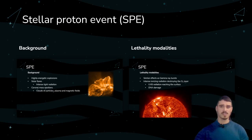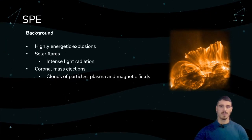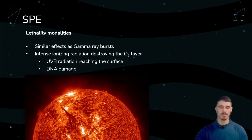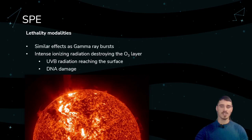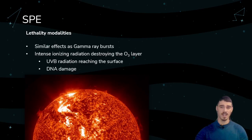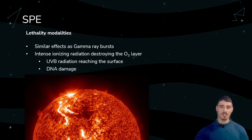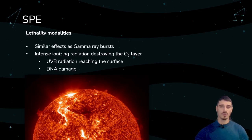Now we will be taking a look at the stellar proton event. SPEs are highly energetic explosions originating in stars. These include solar flares — flashes of intense light radiation that erupt from small sections of the star — as well as coronal mass ejections, which are giant clouds of particles, plasma, and magnetic fields ejected from the star. The lethality effects are similar to those of gamma-ray bursts, with destruction of the ozone layer leading to more UVB radiation reaching the surface and eventually causing DNA damage in organisms.